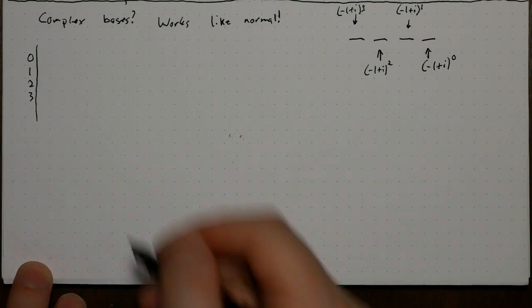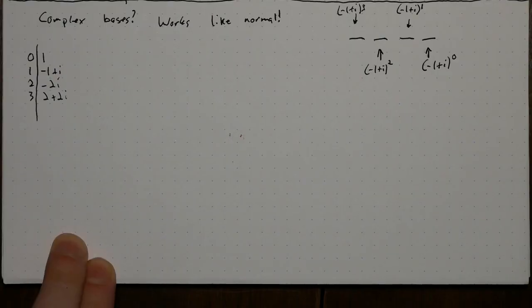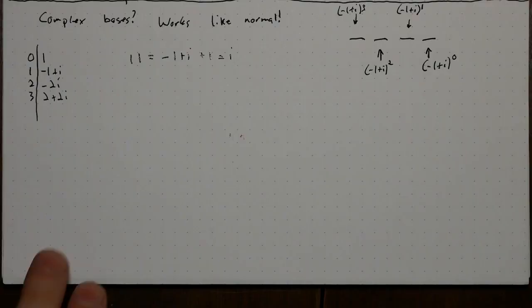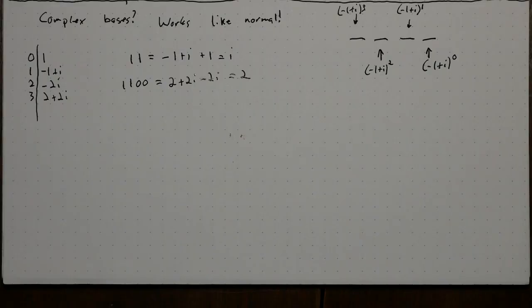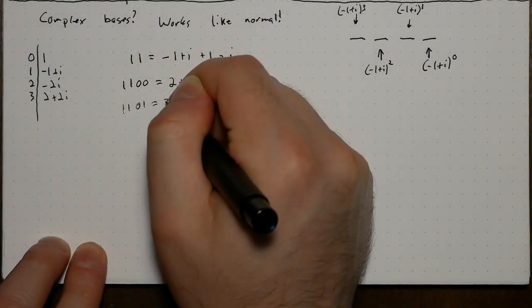Let's calculate the first few powers. Now we can check that 1 1 adds up to i, 1 1 0 0 adds up to 2, and 1 1 0 1 comes out to 3.